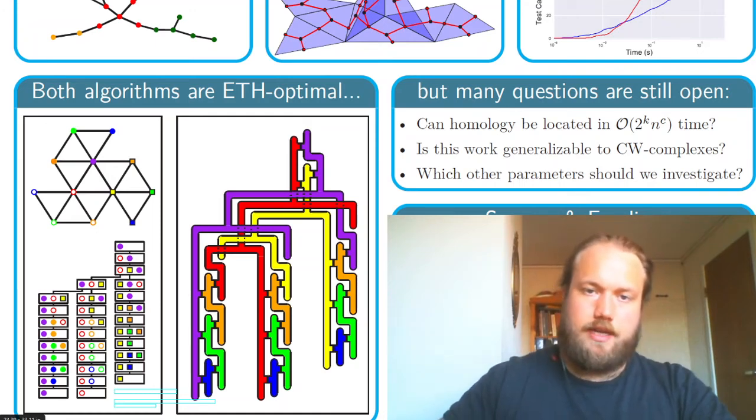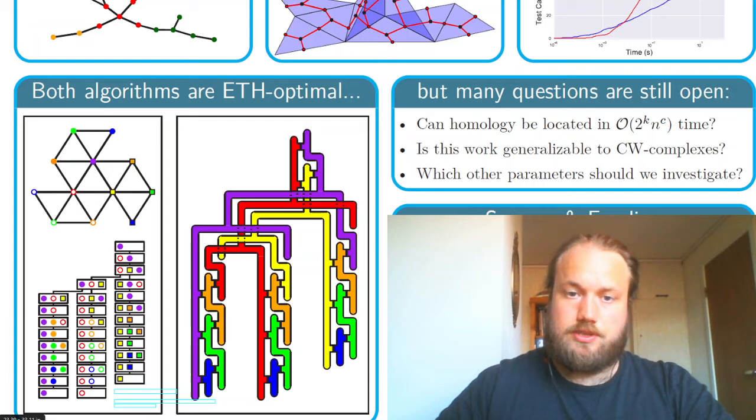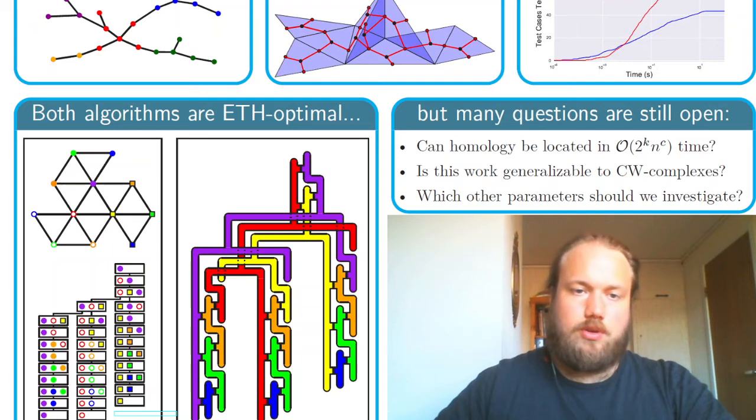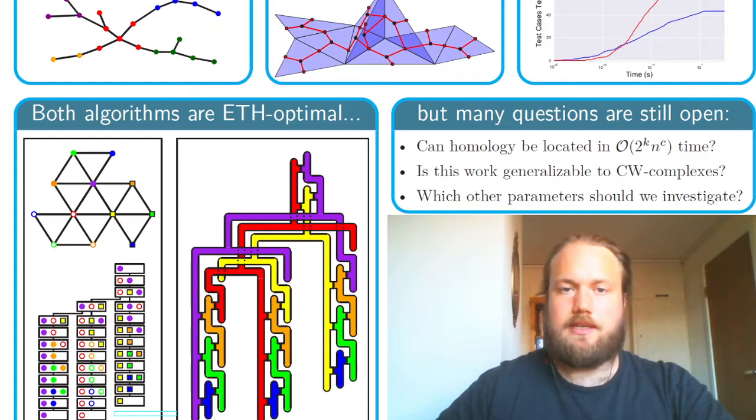Finally, I have a few open questions that I would like to say a few words about. First, our best algorithm has a guaranteed runtime of o of 4 to the k times n to the c and we don't know if this is the best we can do although we strongly suspect that it's not.